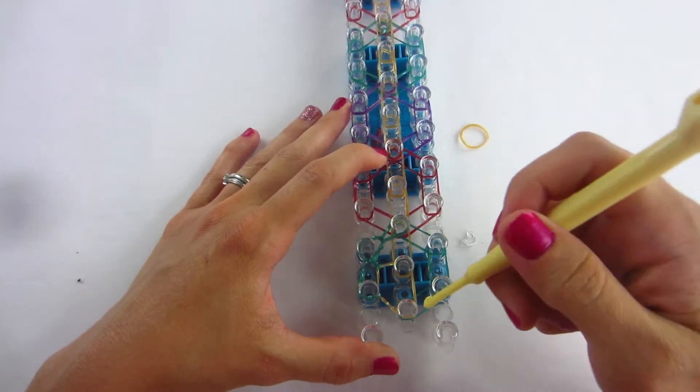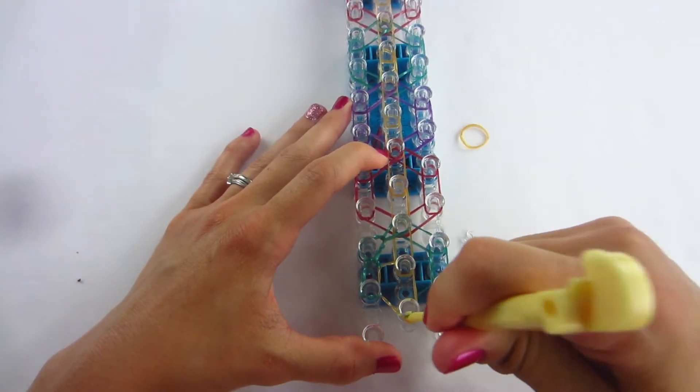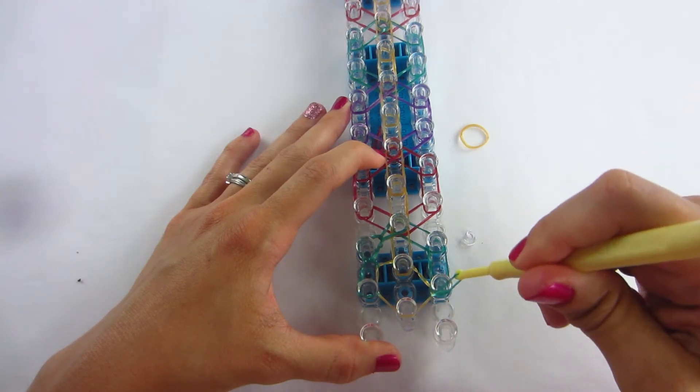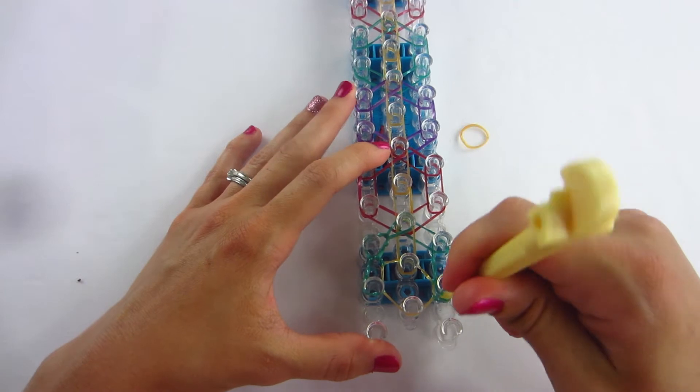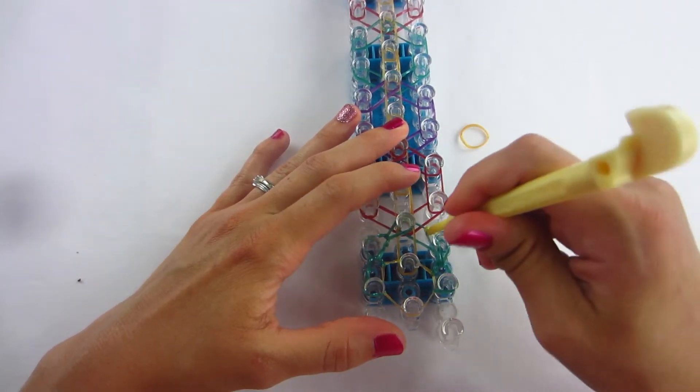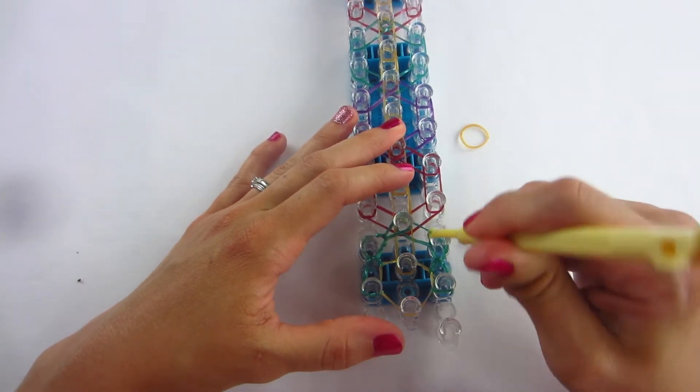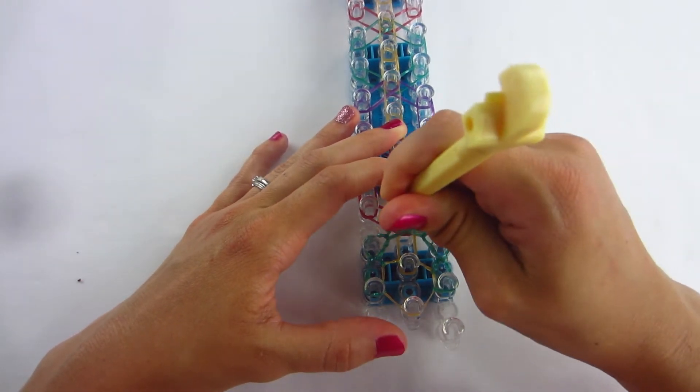Now we're going to start over at the bottom, grabbing that green band that's on the bottom of the peg, bringing it up and to the right. And then we're going to go down inside of there and get the green one to go straight up. Grab the next green band and finish your circle.